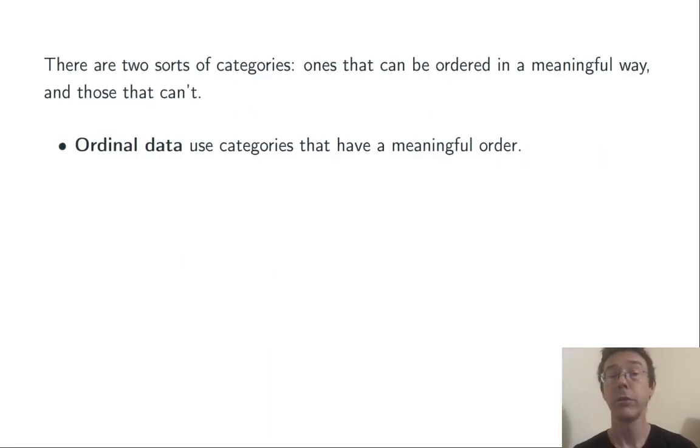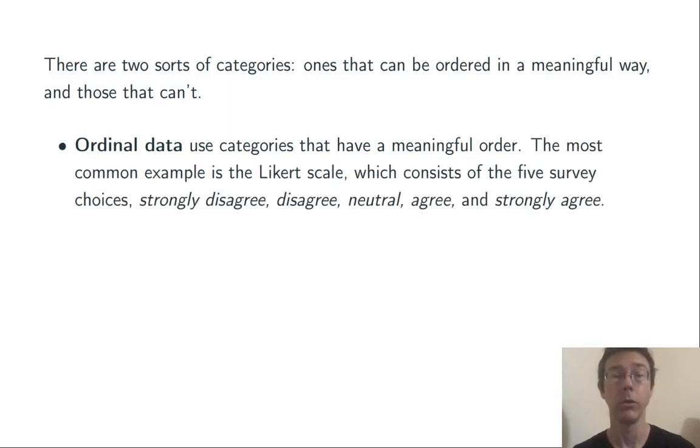There are two different sorts of categories: ones that can be ordered in a meaningful way, and those that cannot. Ordinal data uses categories that do have a meaningful order. The most common example is the Likert scale, which consists of five survey choices: strongly disagree, disagree, neutral, agree, and strongly agree. Those obviously have a natural order.